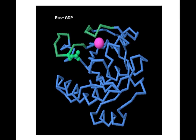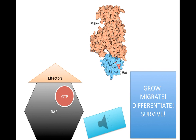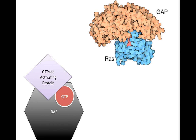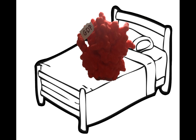GTP binding causes a distinct conformational change in RAS, which has a high affinity for numerous effectors. Interactions with these effectors promote signal delivery to the target cells. Once the signal has been delivered, a GTPase activating protein, or GAP, will bind to the RAS-GTP complex in a way that stabilizes the catalytic machinery of RAS and optimally positions a water molecule for nucleophilic attack of the phosphate of GTP. The phosphate is released, RAS undergoes conformational change back to its off-state, returning it to its resting inactive form.